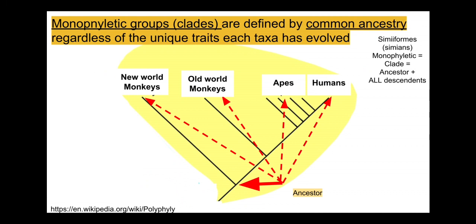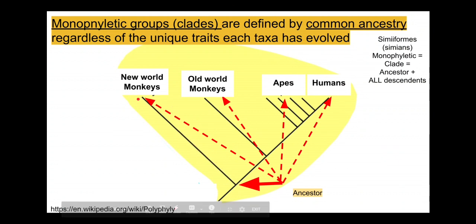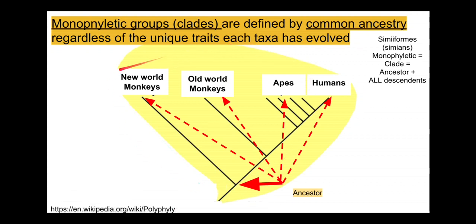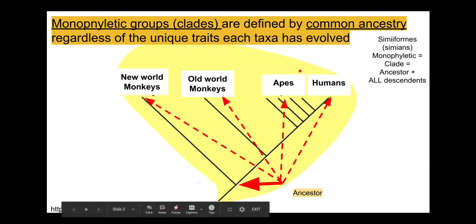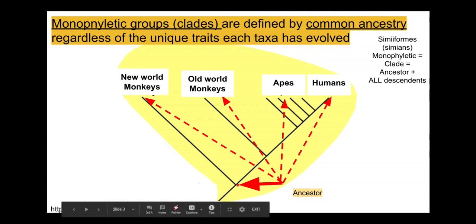Monophyletic groups are clades defined by common ancestry — we have an ancestor and all of its descendants form the clade. If we exclude one of those descendants we end up with a non-monophyletic group. For example, if we tried to make humans special by defining non-human primates and saying humans were not primates, we'd be ignoring the genetic and morphological evidence that we evolved from a common ancestor.